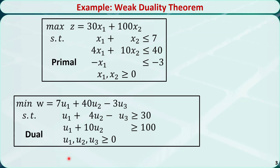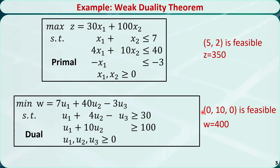Let's check an example. For the primal, the point (5, 2) is a feasible solution because it satisfies all the constraints. We plug these values into the objective function, and z equals 350. For the dual, the point (0, 10, 0) is a feasible solution because it satisfies all the constraints. We plug in these values into the objective function, and w equals 400. In this example, z is less than or equal to w. We can also check other feasible solutions to the primal and dual — they should all follow this rule.